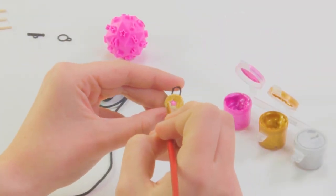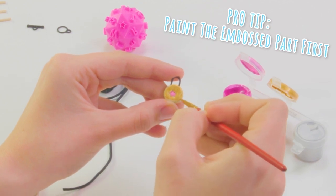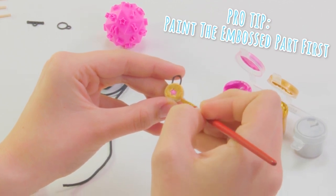Once they're dry, paint them with the metallic paints for a stylish finish. Pro tip, paint the embossed part of your charms first before painting the rest.